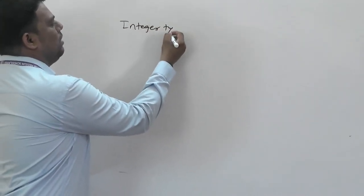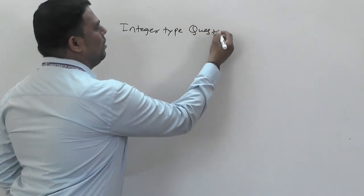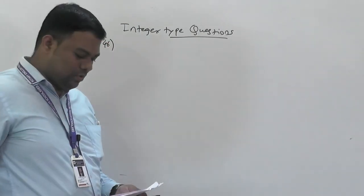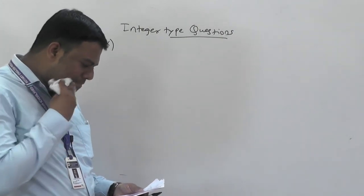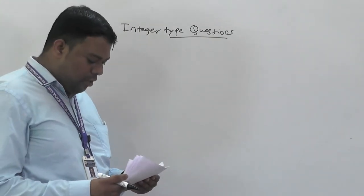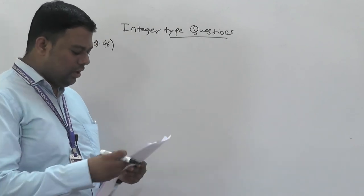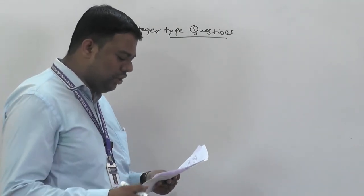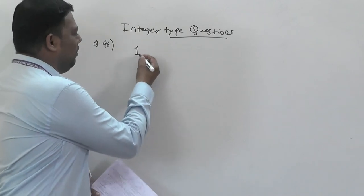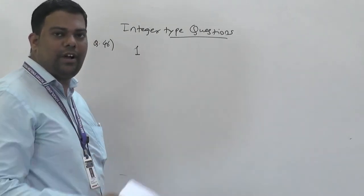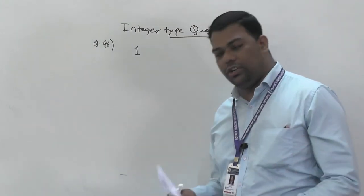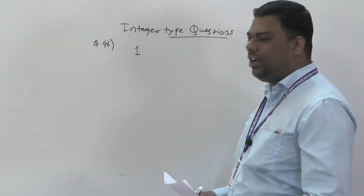Now integer type questions. Question number 46: the amount of electricity that can deposit 108 grams of silver from AgNO₃ is 1 Faraday, because 108 g is the atomic mass of Ag, and the equivalent weight of Ag equals its atomic mass (Ag⁺ has charge 1). So the answer is 1.